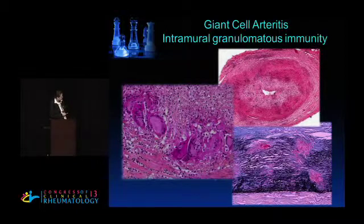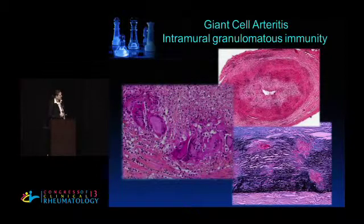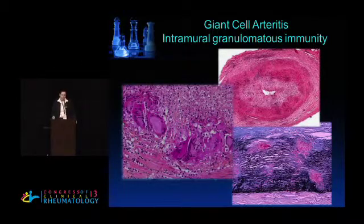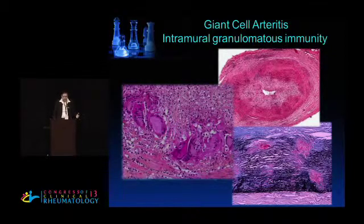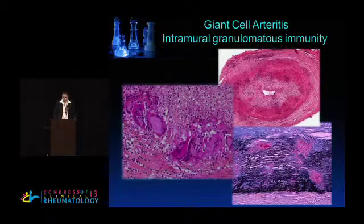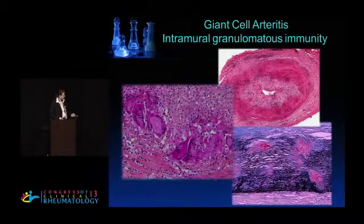Giant cell arteritis is a granulomatous reaction, typically, and in most patients it is. We utilize the patterning of that immune reaction to help us make a diagnosis. Not only does it form granulomas, it forms them in a very unique place within the walls of arteries. This separates it from other vasculitides, which often have inflammation outside of the blood vessel — like GPA, where most inflammation has nothing to do with the vessel. But that will not happen in GCA. GCA restricts itself to the wall of a blood vessel.